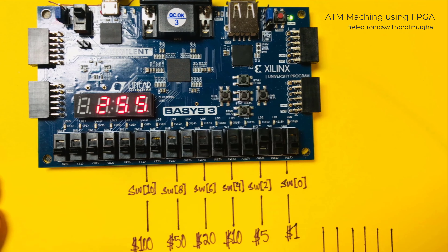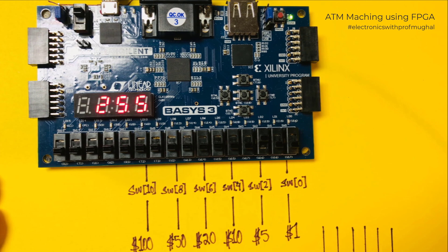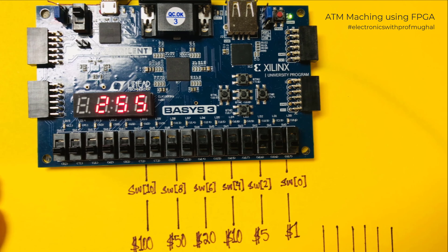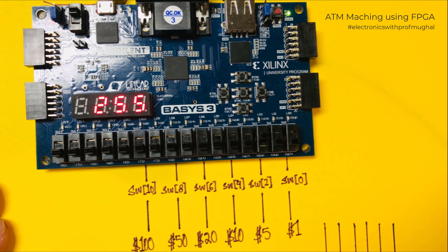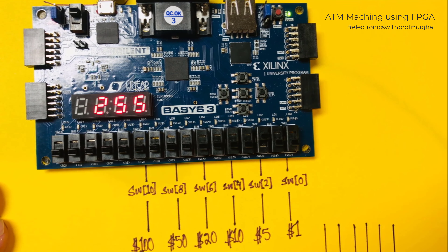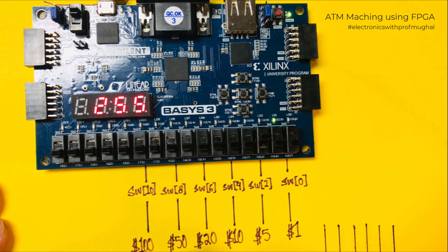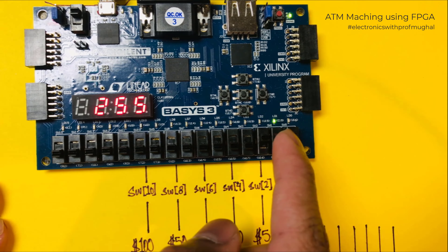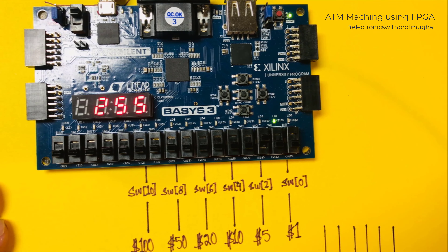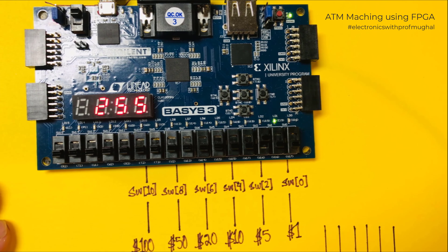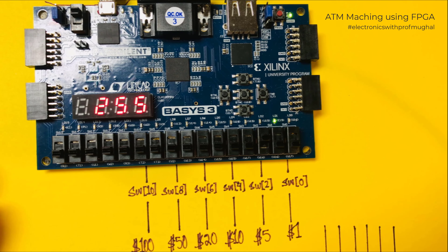If I keep depositing it will keep incrementing by five dollars. Once it reaches 250 and I press one more time I get 255 dollars — I've now reached the maximum amount I can deposit into the bank. Now that I've reached the maximum limit of 255 dollars, if I try to deposit any more money it's not going to do anything. Instead it gives me an LED warning indicating that the maximum limit has been reached.